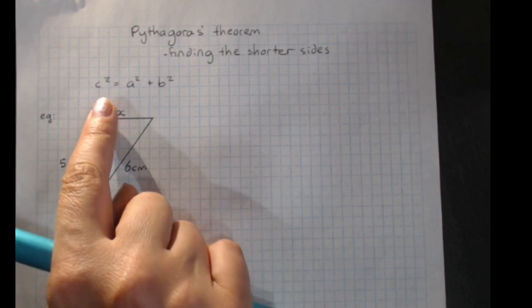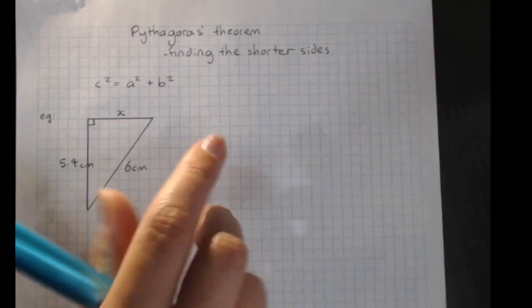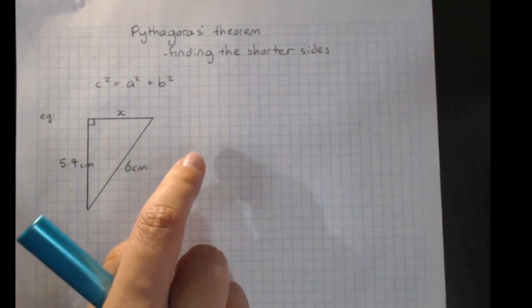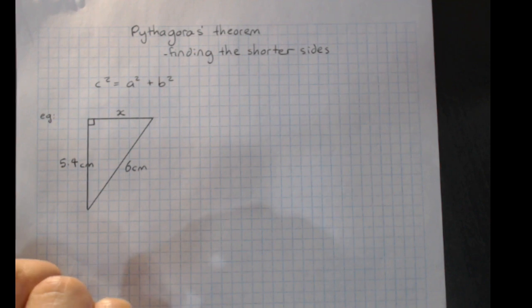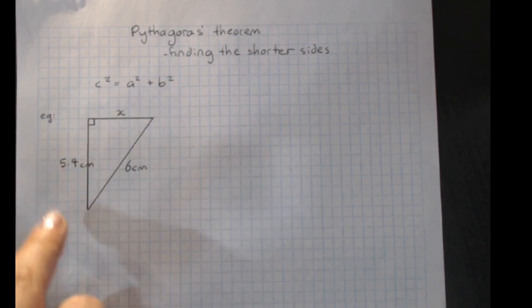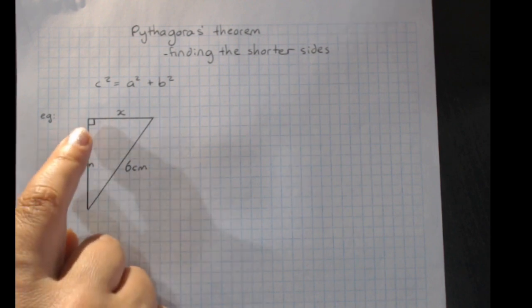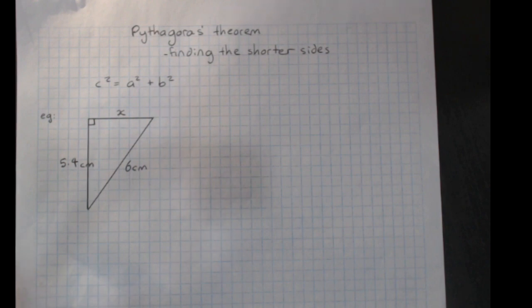Now, we'll remember that Pythagoras' theorem is c squared equals a squared plus b squared, and we've learnt to use that to find the value of the hypotenuse. But we also need to be able to take a question like this one, where we know the hypotenuse, the longest side, and one short side, and we want to find the other short side.